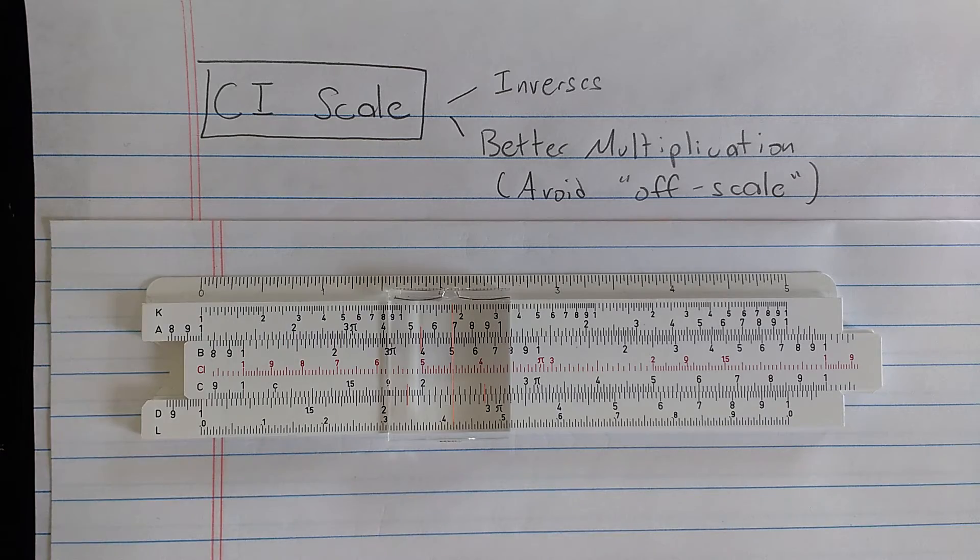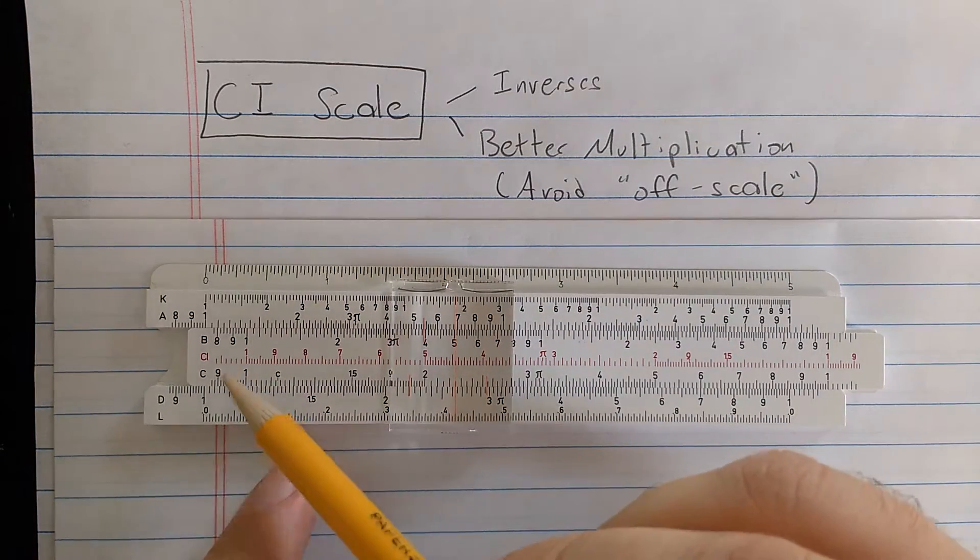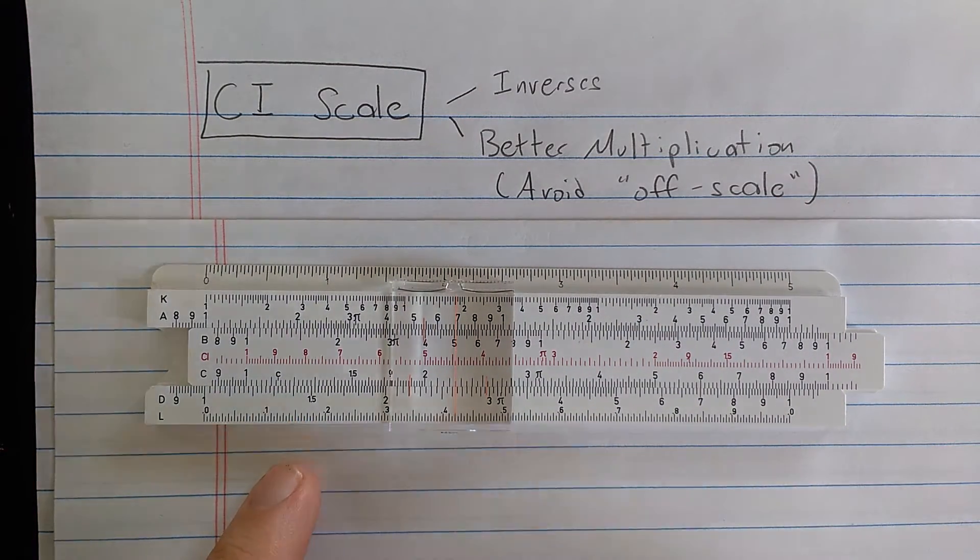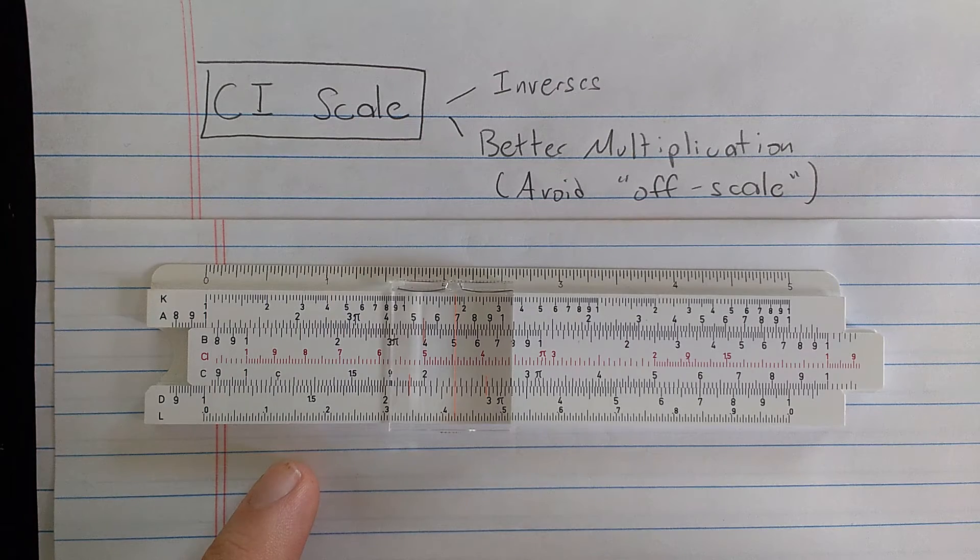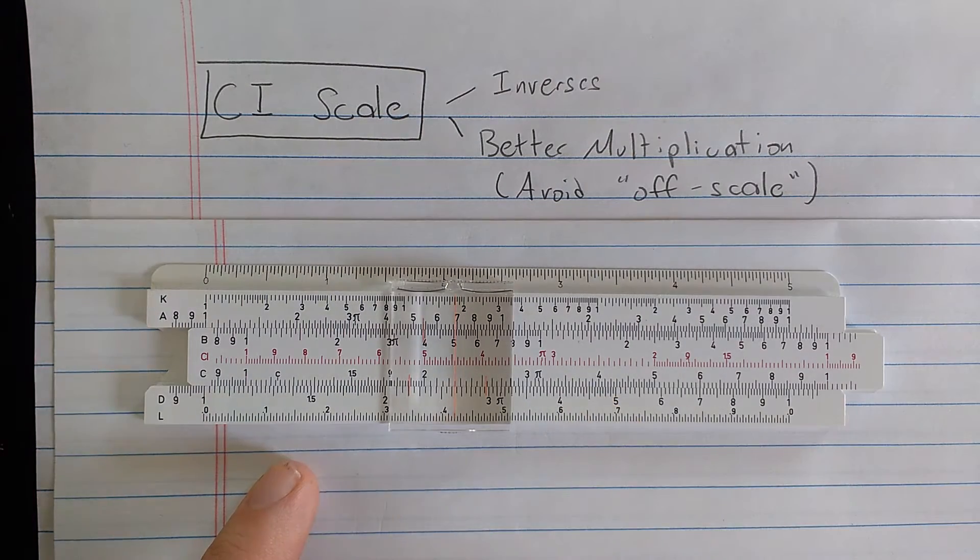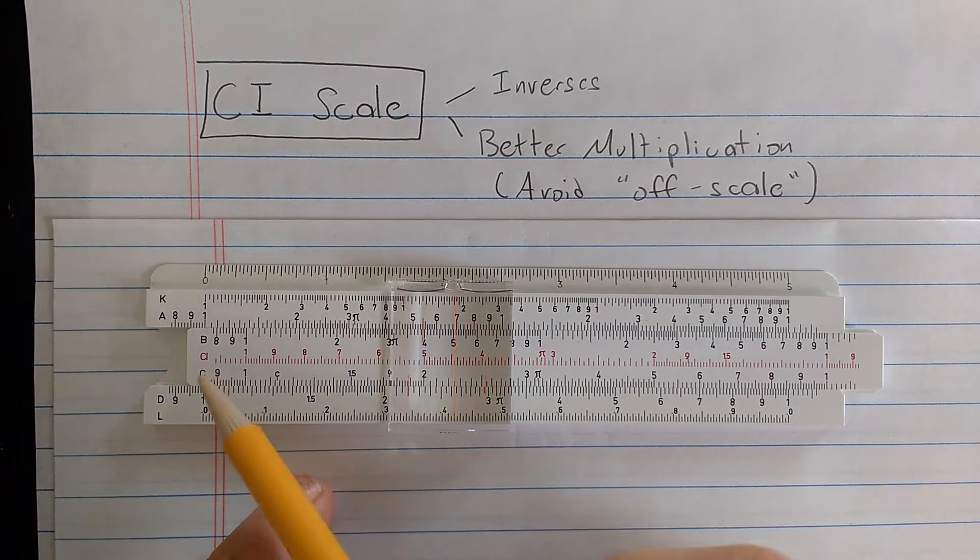In this video I'm going to explain the basic use of the CI scale. Most basic slide rules will have the CI scale. We're looking at a basic type slide rule, so most that you'll find available have the scales on this slide rule.